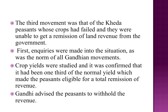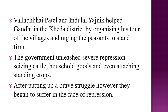The third movement was that of the Kheda peasants, whose crops had failed and who were unable to get a remission of land revenue from the government. Inquiries were made into the situation, crop yields were studied, and it was confirmed that the yield had been one-third of normal, making the peasants eligible for a total revision of revenue. Gandhiji advised the peasants to withhold the revenue.